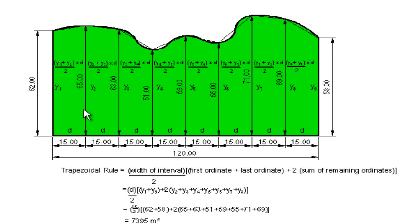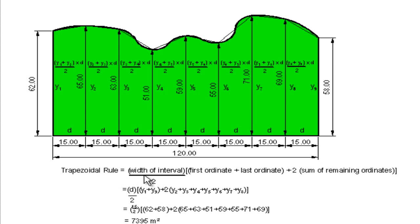The trapezoidal rule formula is: d/2 × [(y1 + y9) + 2 × (sum of intermediate ordinates y2 through y8)]. In words: the width of the interval divided by 2, times the first ordinate plus the last ordinate, plus 2 times the sum of the remaining ordinates.